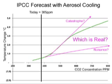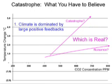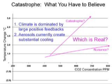From this analysis, we can see that in order to believe higher forecasts, you have to believe two things: one, that the world's climate is dominated by strong positive feedback, and two, that man-made aerosols are substantially cooling the Earth, masking half or more of the actual warming. Neither of these propositions are well supported by good science.